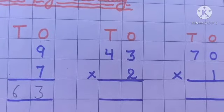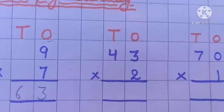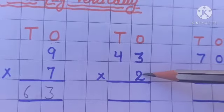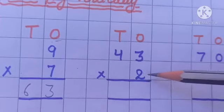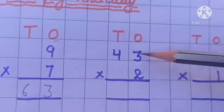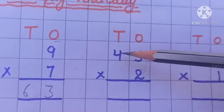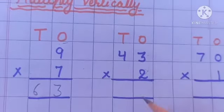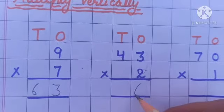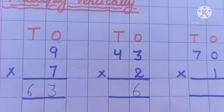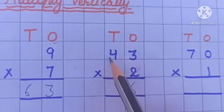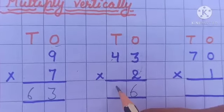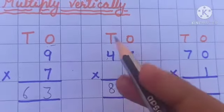Let's solve the next example. We need to multiply a 2-digit number by a 1-digit number. First recite the table of 2 till 3, then recite the table of 2 till 4. Two times three is equal to 6, so write 6 at the ones place. When we recite the table of 2 till 4, we get 8, and we write 8 at the tens place.